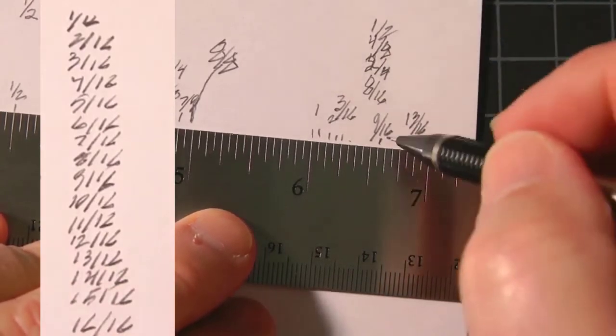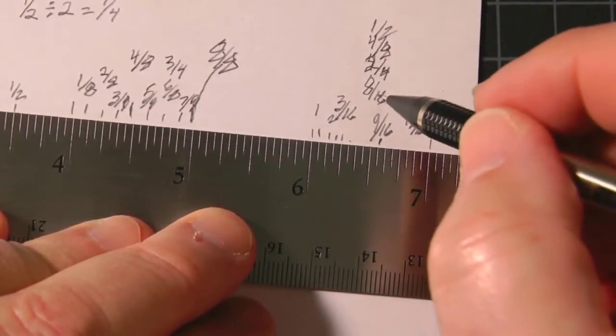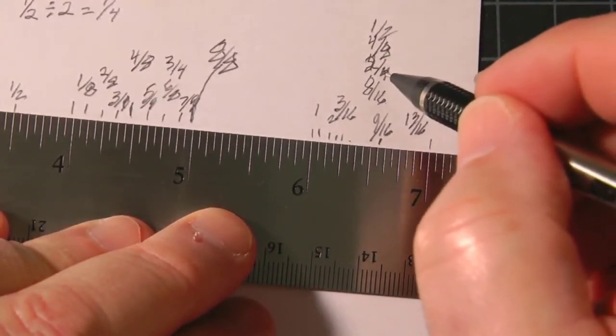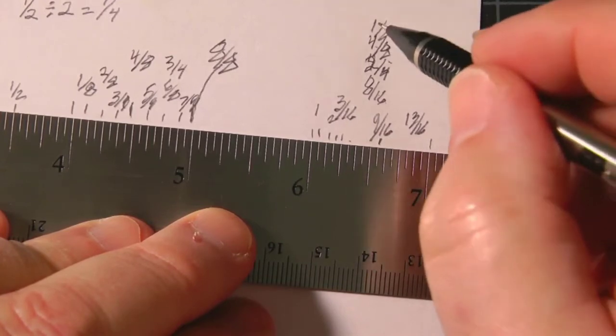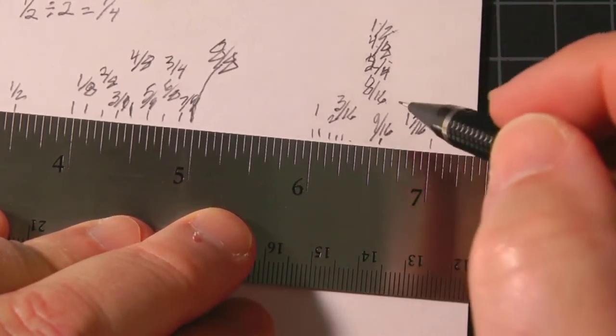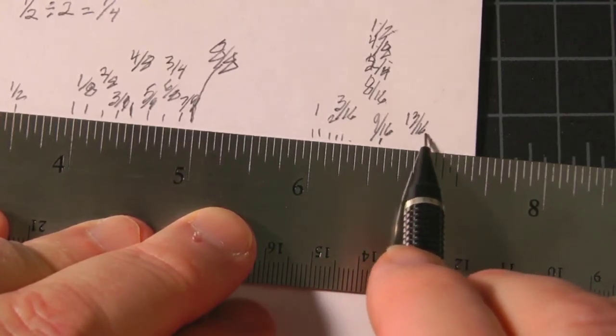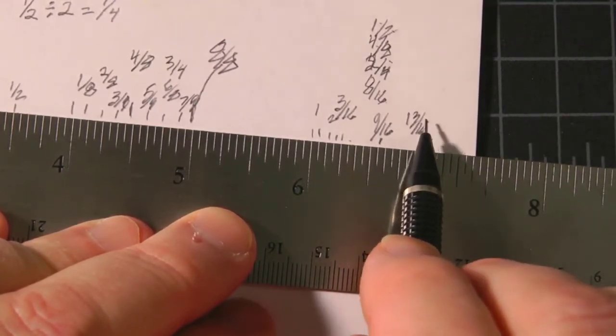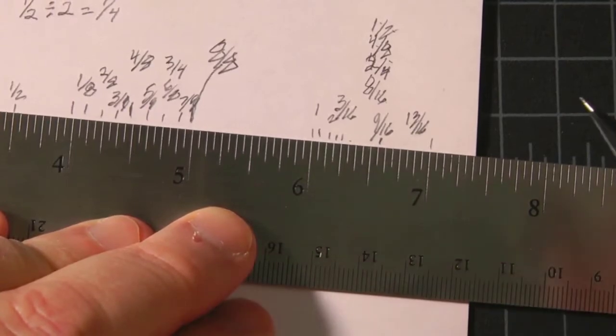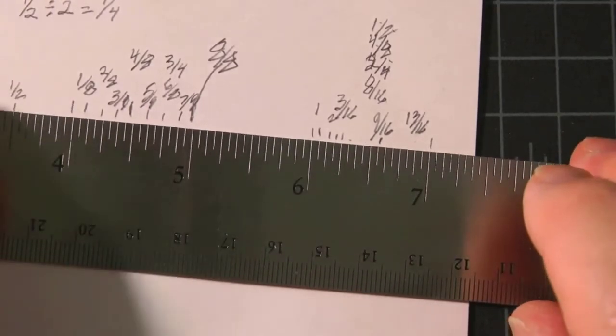So all these numbers mean the same thing when you get to the eight sixteenths, two over four, two quarters, four eighths, or one half. Those all mean the same thing. But when you get in between them, when they're an odd number, you have to use the whole thing. So when they're odd numbers, you can't reduce them. When they're even numbers, you can.